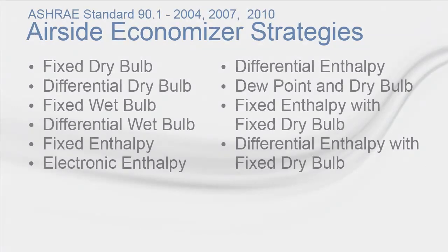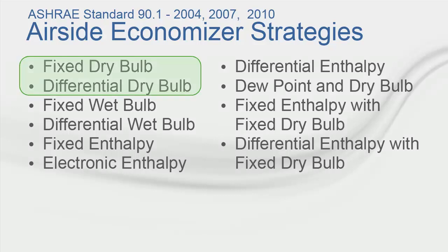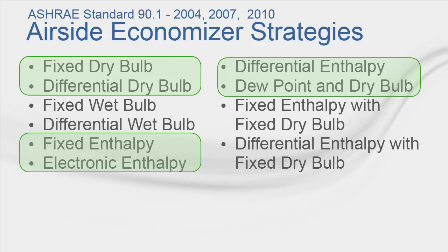Finally, differential enthalpy with fixed dry bulb is similar to fixed enthalpy with fixed dry bulb, with the exception being that instead of a fixed enthalpy disable point, the outside and return air enthalpies are compared and the cycle is disabled when the outside air enthalpy exceeds that of the return air. The 2004, 2007, and 2010 versions of Standard 90.1 allowed for the use of fixed and differential dry bulb, fixed, differential and electronic enthalpy, and the dew point and dry bulb control methods. These methods have been excluded from the 2013 version of the standard along with the electronic enthalpy and the dew point and dry bulb methods.